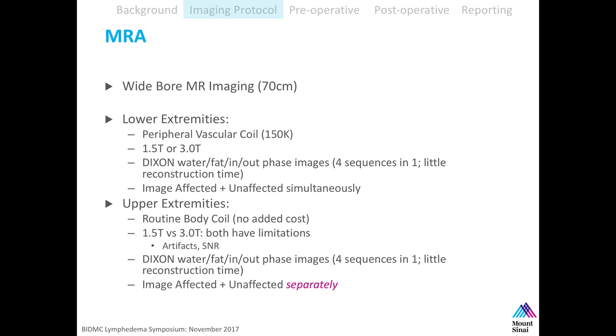For upper extremities, we use more routine coils that come with any MRI package. 1.5 and 3 Tesla have their advantages and disadvantages — 3 Tesla gives more signal but also more artifacts. Since upper extremities are at the edge of the MRI, that causes more artifacts than legs, which are more in the middle. For upper extremities, you have to image one and then the other — you can't image both at the same time with good quality. For legs, however, you do image them at the same time.